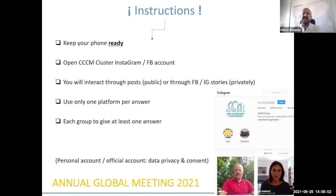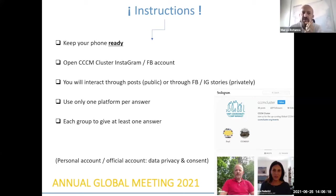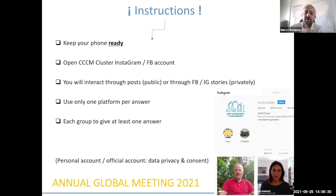It will be group work, so you will come with an answer from the group. For each group, provide at least one answer on social media. If you are five people, decide what you agree upon and then send one answer — at least one. We say 'at least' because you can also reply from your personal point of view, but we want at least one answer per group for more interaction.